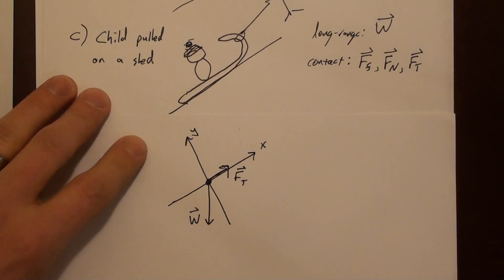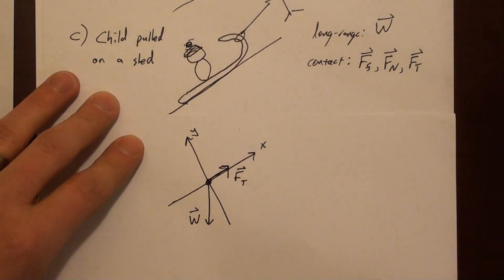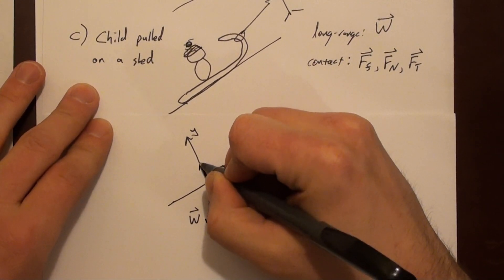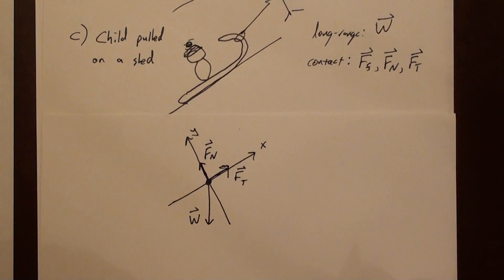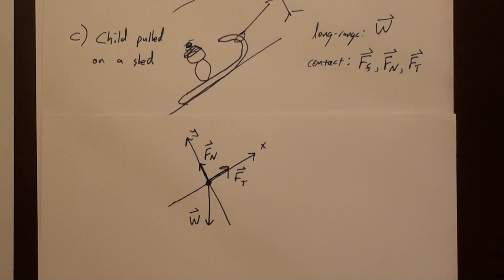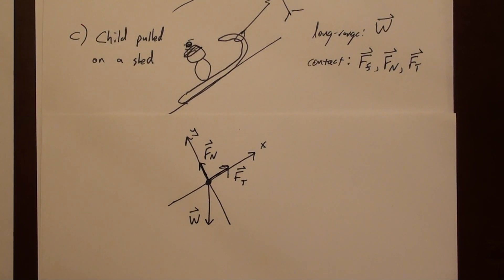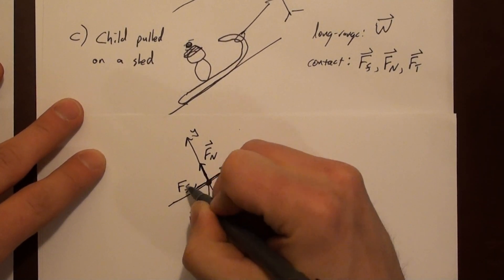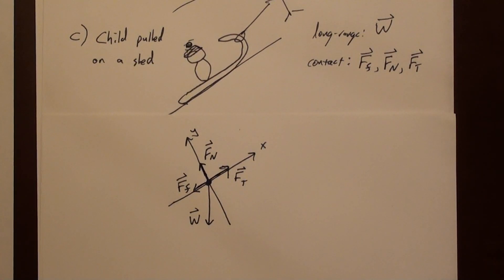The normal force acts perpendicular to the surface pointing upward — that's F sub normal. For friction, it must be parallel to the incline and oppose motion: since the child is being pulled up the hill, friction acts down the hill. These are the four forces making up our free body diagram. This is the setup for applying Newton's second law, which we'll look at next time.